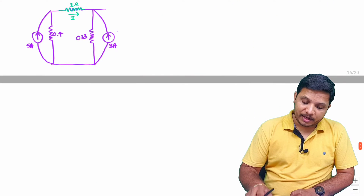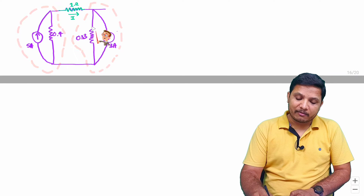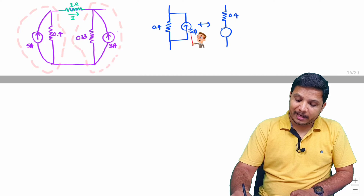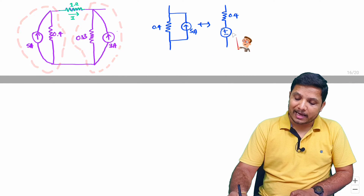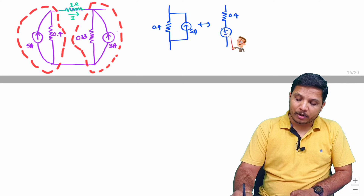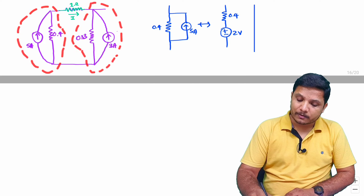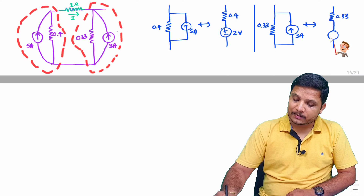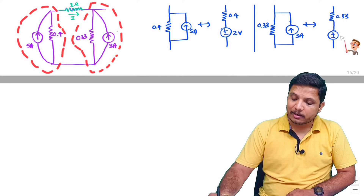For further simplification, I will transform the current sources back into voltage sources. The first gives a voltage source in series with the 0.4 ohm resistor. Direction is minus-plus as per the arrow, and V = IR = 5 × 0.4 = 2 volts. The second gives a 0.33 ohm resistor in series with a voltage source, direction minus-plus, and V = IR = 3 × 0.33 = 1 volt.